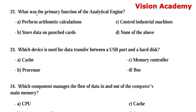Question number 22: What was the primary function of the analytical engine? Option A: perform arithmetic calculations. Option B: store data on punched cards. Option C: control industrial machines. Option D: none of the above. The right answer is Option A, perform arithmetic calculations.